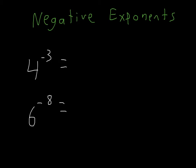Negative exponents are a little bit trickier, but really they're not that difficult. For example, 4 to the negative third is just 1 over 4 to the third.